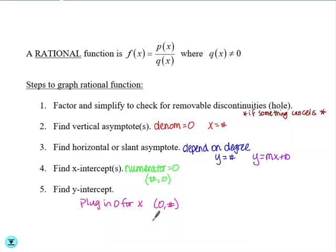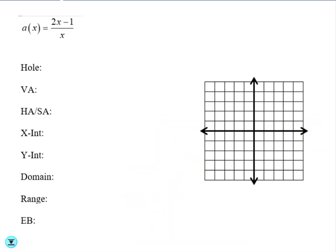So let's look at a few examples. First, we have a of x equals 2x minus 1 over x. We need to double-check and see if we can factor anything and simplify. No — so that tells us right away that we do not have a hole or removable discontinuity in this graph.